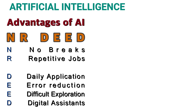Next is Difficult Exploration: complex machines can be used for exploring the ocean floor and hence overcome human limitations. Next is Digital Assistant: highly advanced organizations use digital avatar replicas for digital assistants that can actually interact with humans and reduce the need for human intervention.